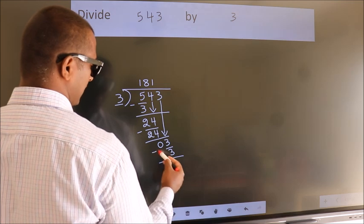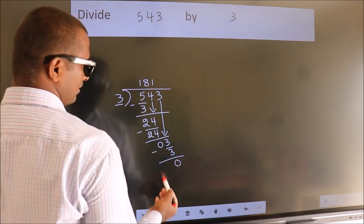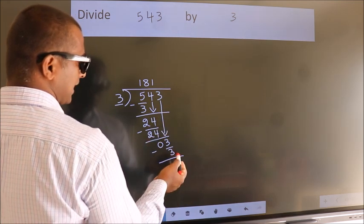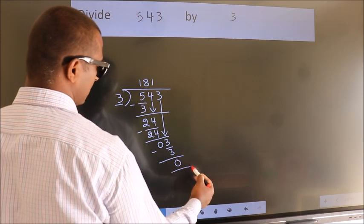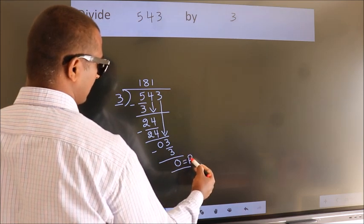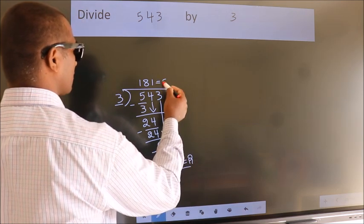Now, we subtract. We get 0. No more numbers to bring it down. So, we stop here. This is our remainder. This is our quotient.